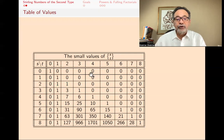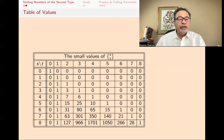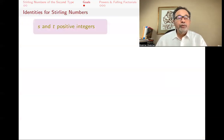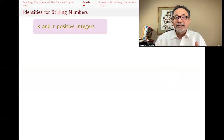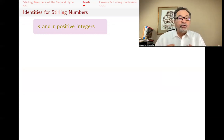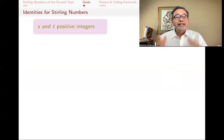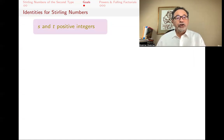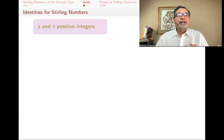That table has many properties — for example, on every row it is unimodal: the terms go up and then come down. The goal of this lecture is to give identities for Stirling numbers, focusing on the techniques: combinatorial arguments where we count the same situation two different ways, and generating function techniques, which use calculus to find identities for things that are quite discrete.